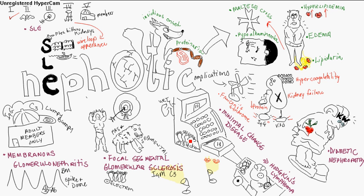Complications include infection by gram-positive organisms, thromboembolism, and protein malnutrition. Treatment is prednisone, with an excellent response. Cyclophosphamide or chlorambucil is used for steroid-resistant cases. It's considered the prototype of nephrotic syndrome.